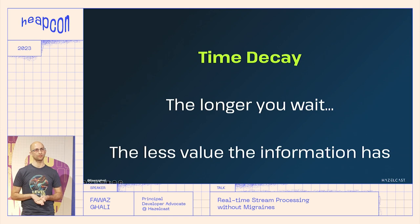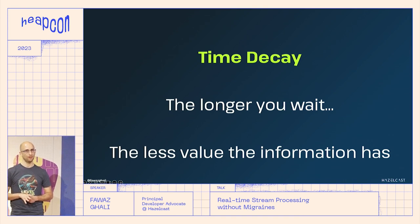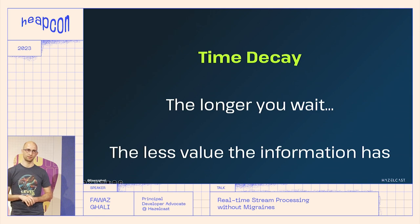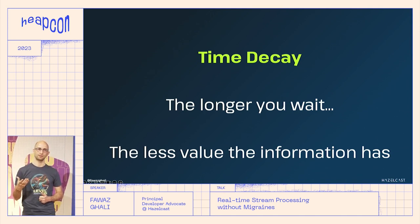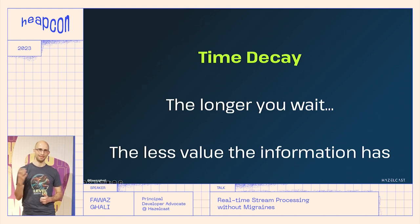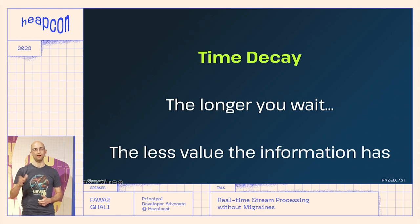There's a concept called time decay — even if you're not working with stream processing, you're using it in everyday activity. Time decay means: the longer you wait, the less value this information has. For example, if I ask what you did last weekend you can probably recall it, but if I ask what you did last year or five years ago, you'd struggle to answer.